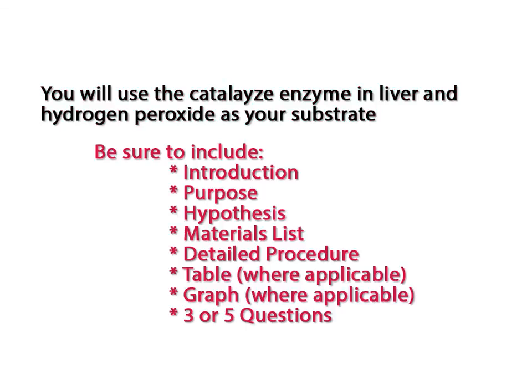Your experimental design must include an introduction, a purpose, a hypothesis, a materials list, a detailed procedure, and some way for the experimenter to report out — such as a table, a graph, and three to five questions that can be answered by performing the experiment.